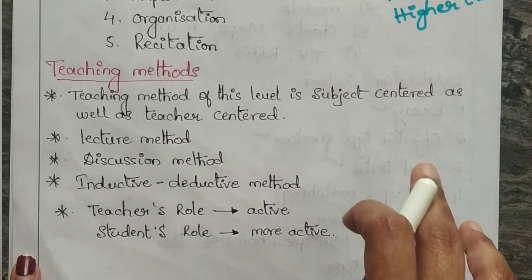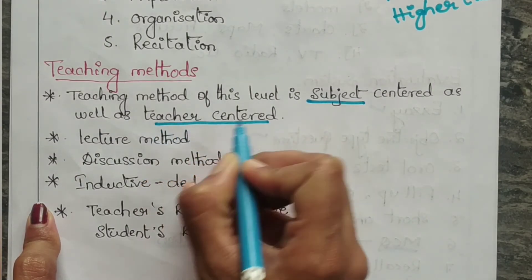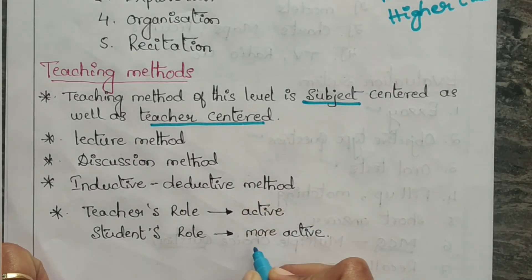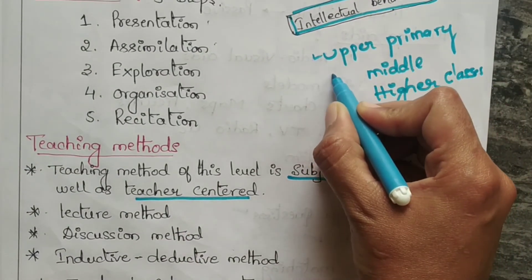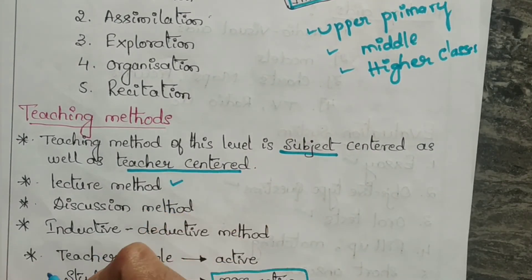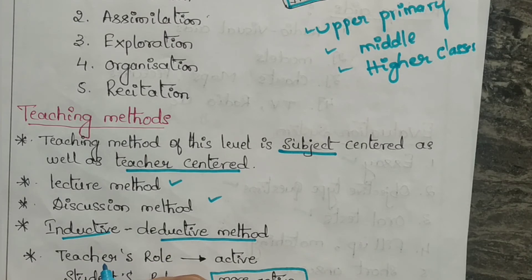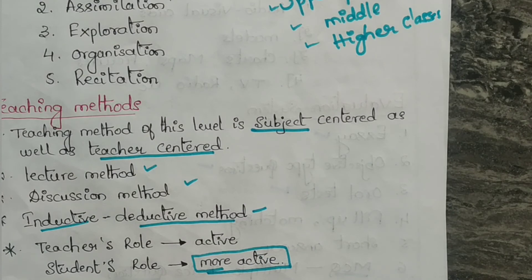Coming to teaching method: the teaching method at this level is both subject-centered and teacher-centered, though students will also be active. For upper primary, middle, and higher classes, we can use the lecture method, discussion method, and inductive-deductive method of teaching — where you provide examples and explain the content by giving examples.